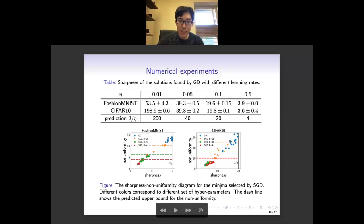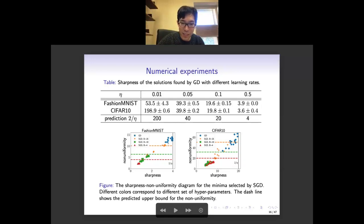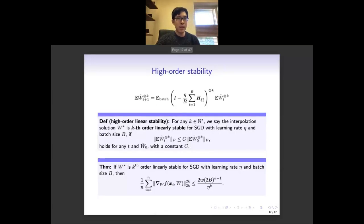For SGD, if we fix the learning rate but change the batch size, we have a different upper bound for the non-uniformity. Our experiments show that the global minimum found by SGD has non-uniformity approximately upper bounded by the bounds given by the theory. There are some points slightly above the prediction, which may also be related to the edge of stability.